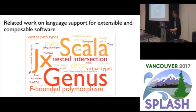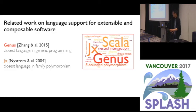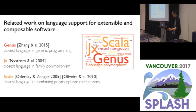There has been decades of work on language support for extensible and composable software. Genus is the closest language to Familia in terms of the expressiveness of the generic programming mechanism; however, Genus does not support family polymorphism. The approach to family polymorphism in Familia is adapted from the JX language, but JX does not support parametric polymorphism. Scala uses the concept design pattern and implicits for generic programming, but this approach lacks the full expressive power of Genus or Familia. Scala also supports family polymorphism via virtual types, but this design pattern does not scale to cross-family inheritance and further binding at arbitrary nesting depth.